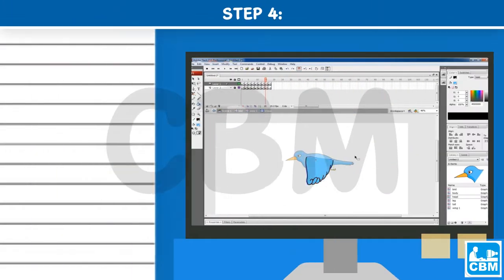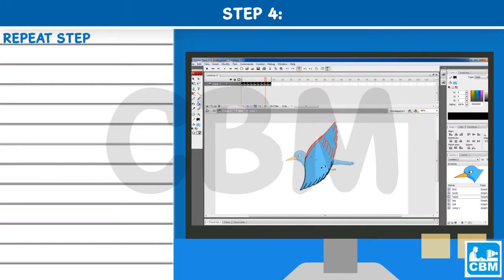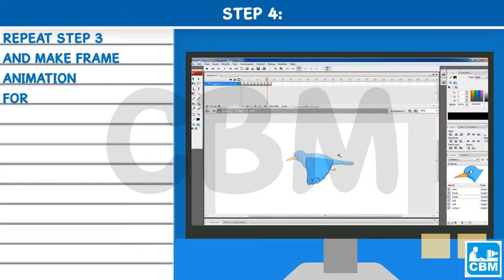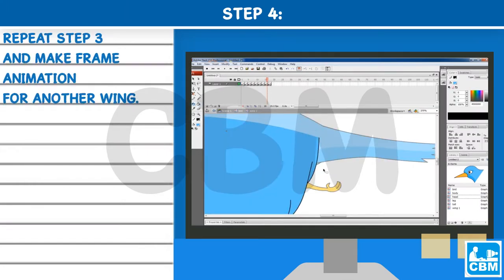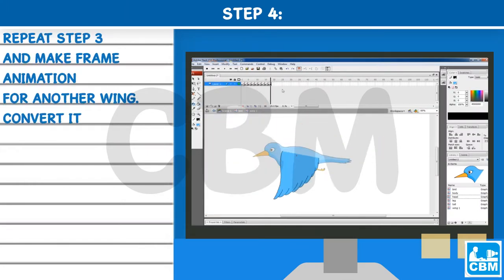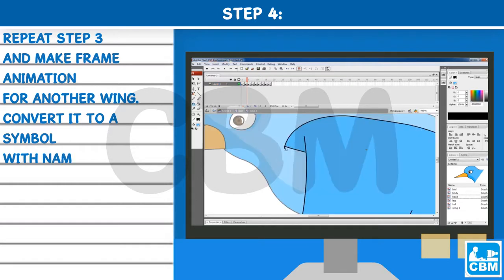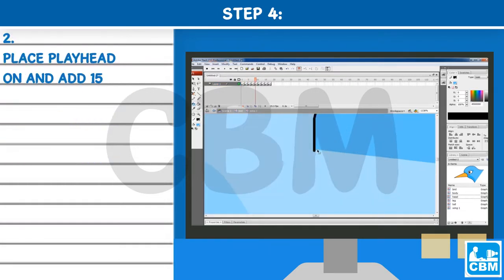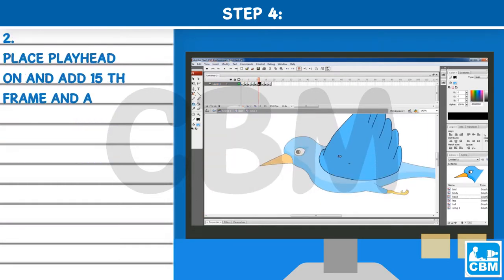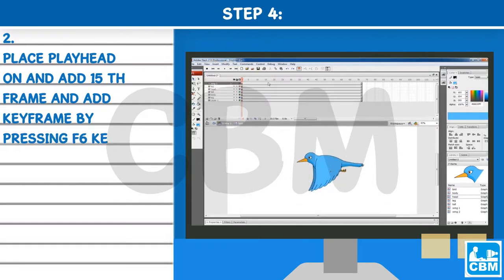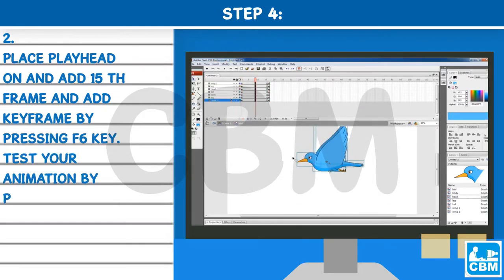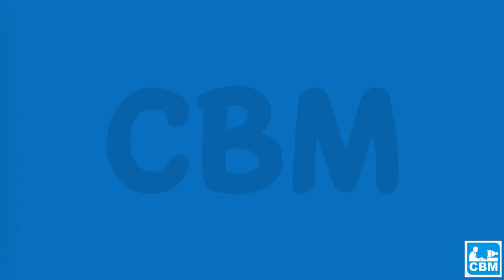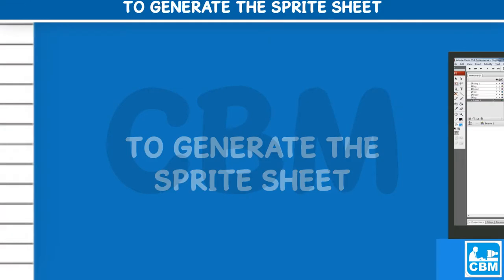Step 4: Repeat Step 3 and make frame animation for the other wing. Convert it to a symbol with the name 'wing 2'. Place the playhead on the 15th frame and add a keyframe by pressing the F6 key. Test your animation by pressing Ctrl + Enter together.